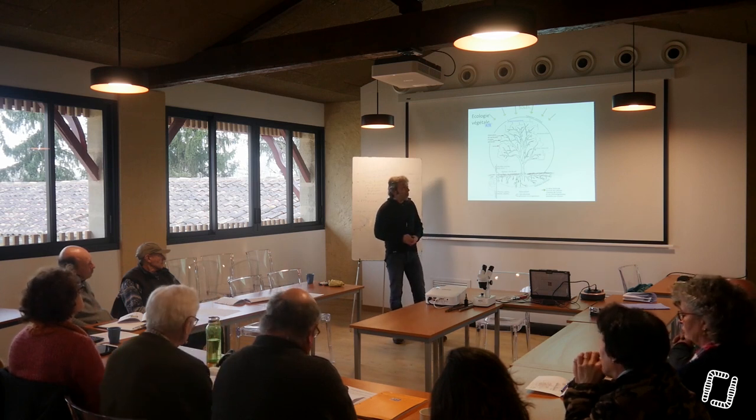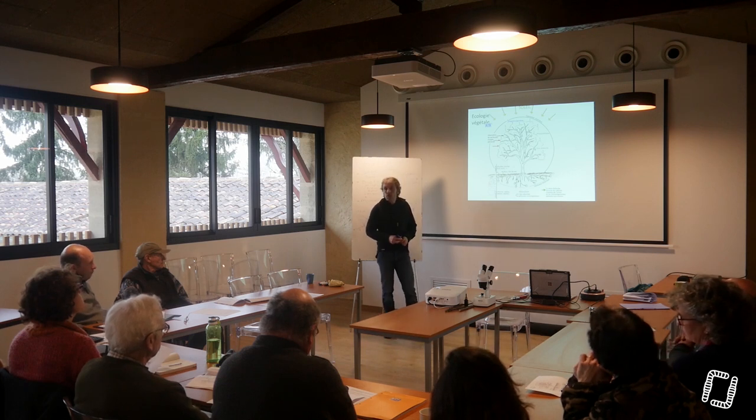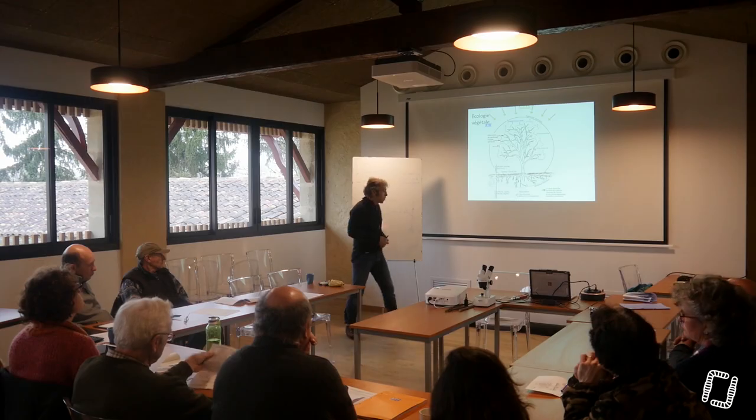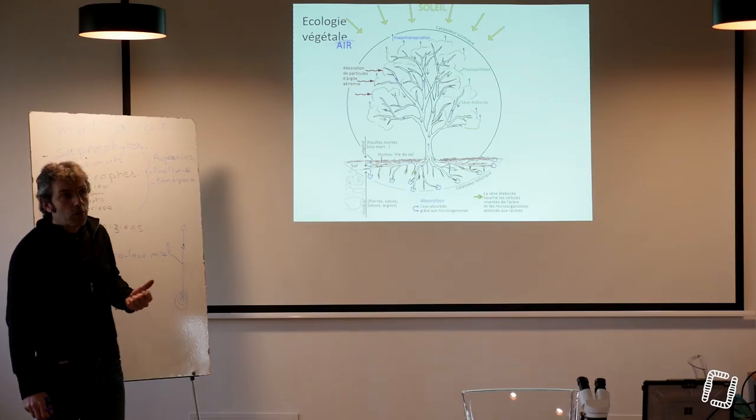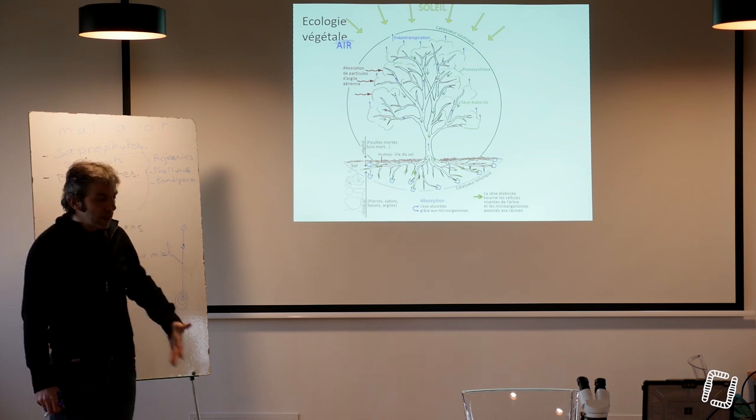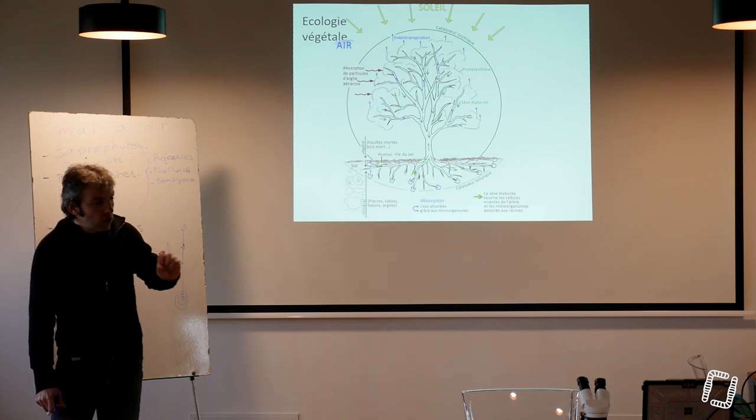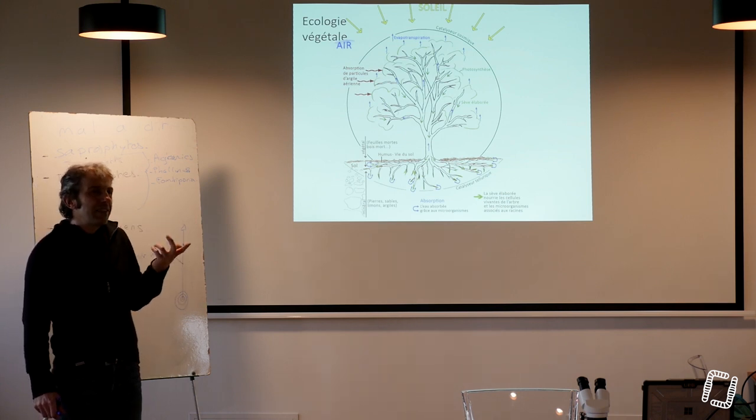Cette sève élaborée va redescendre. Ce qui fait circuler cette sève élaborée, c'est la consommation par les méristèmes. Plus le méristème va consommer, plus il va attirer à lui de la sève élaborée. Jusque dans le sol, on va avoir une descente de cette sève élaborée, consommée par la fabrication de racines.